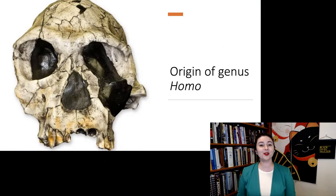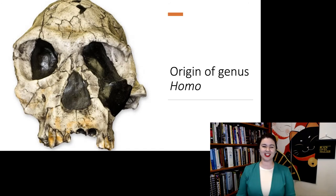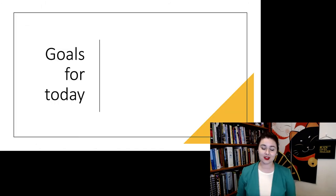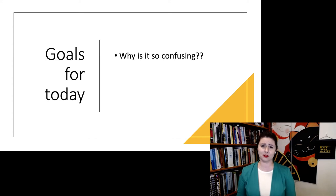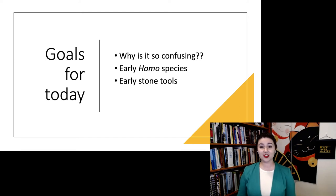Now we're finally talking about the origin of our very own genus Homo. There's a couple things we're going to talk about. First, we're going to talk about why it's so confusing because this is a confusing time. Then we're going to talk about a couple of the early Homo species. Then we'll talk about the very earliest stone tools. And then lastly, we'll close out by talking about some of the common taxonomic debates in this period of time.